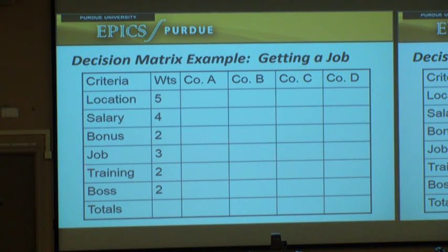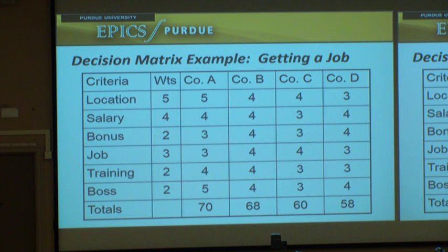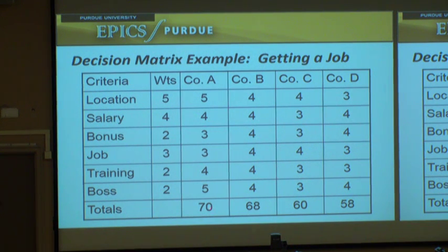I want to think of what's important, and I can put weights. There's not a magic way to do this. This uses something like a five-point scale — where I live is much more important than who I work for, and money's kind of important, but not as much as getting out of Indiana. You look at the different companies and score them on how well they do each criterion. Then you take your weight, multiply it by the score, and add up the weighted scores.